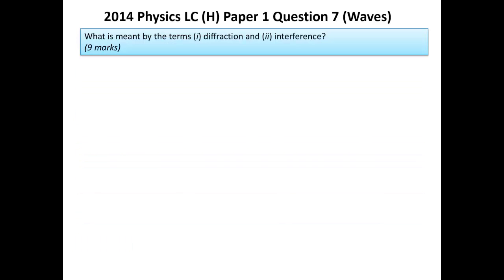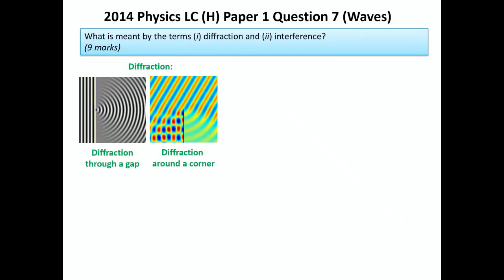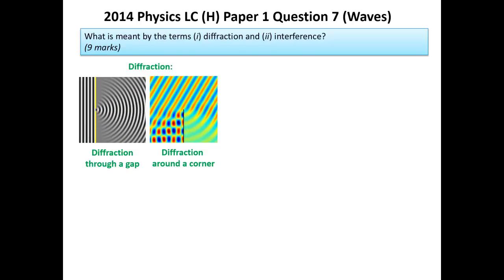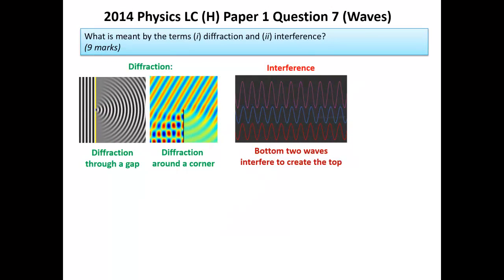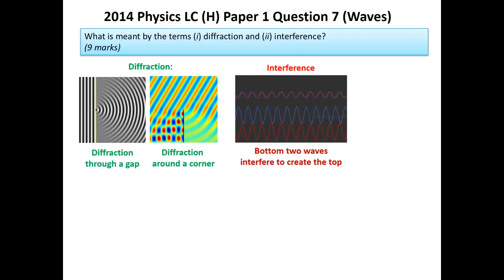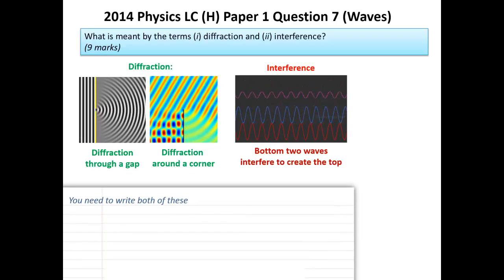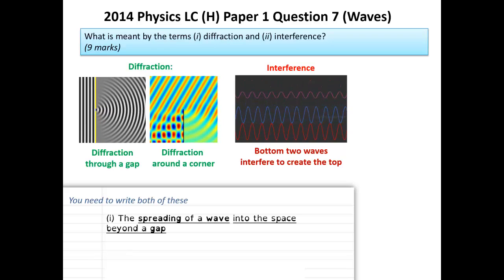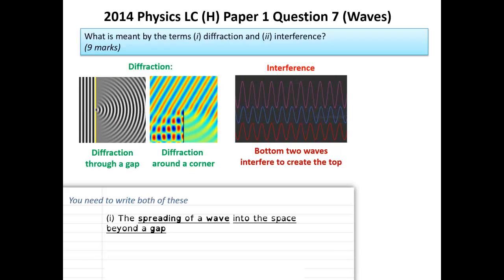This was the waves question. It started off asking what's diffraction and what's interference for nine marks. Diffraction is waves passing through a gap or around a corner. And interference, connected to that, is the algebraic sum of two waves added together. Something you could just write down for the answers: the spreading out of a wave into space beyond a gap.